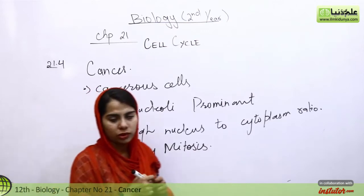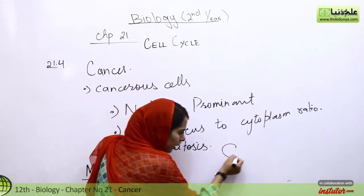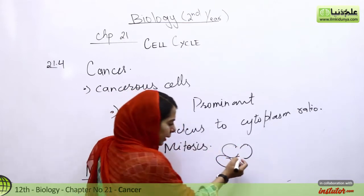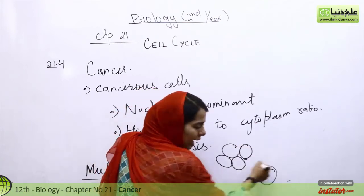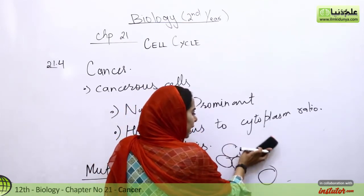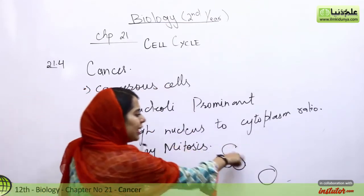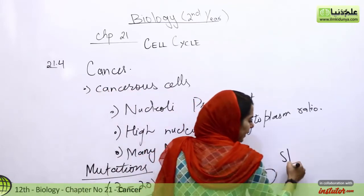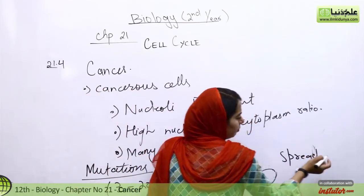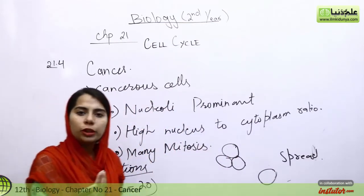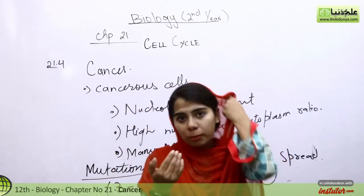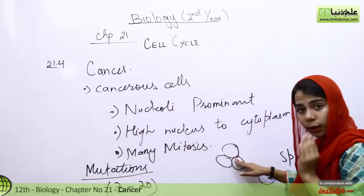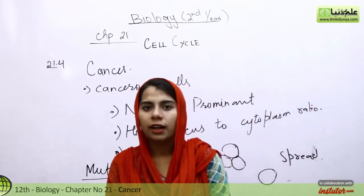Jaise mutation hoti hai, woh cells — jo cancerous cells hoti hain — unka connection neighboring cells se break ho jata hai. Woh aleda ho jata hai apni neighboring cells se. Uske baad woh puri body ke andar separate ho kar jayega. Jaise hi koi mutation hoti hai, tumor wala cell disconnect ho jata hai from its neighboring cells, aur phir puri body mein spread kar jata hai.